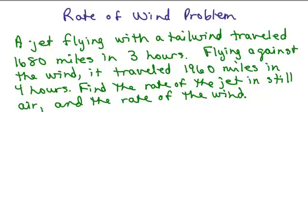We're going to work through a rate of wind problem. A jet flying with a tailwind traveled 1,680 miles in 3 hours. Flying against the wind, it traveled 1,960 miles in 4 hours. Find the rate of the jet in still air and the rate of the wind.